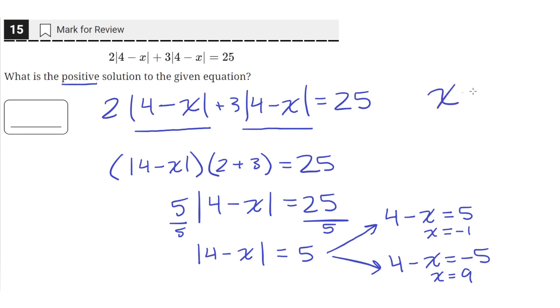Now we have two solutions: x equals negative 1, and x equals 9. But the problem asks for the positive solution, so we use the x equals 9 solution, since 9 is positive, and not the x equals negative 1, since negative 1 is negative. So the answer is 9.